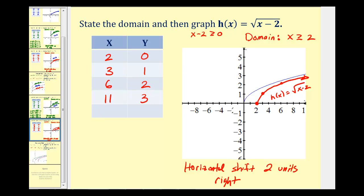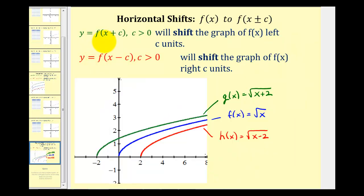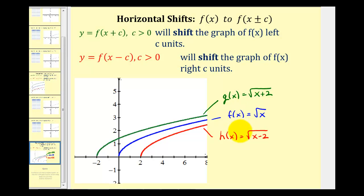Let's summarize the horizontal shifts. If we have y equals f of the quantity x plus c, where c is positive, this is a shift of the parent function left c units — that was g of x equals the square root of x plus two. If we have y equals f of the quantity x minus c, where c is positive, this is a shift right c units — that was h of x equals the square root of x minus two. We can always recognize translations by looking at the function form, or complete a table of values to graph the function.